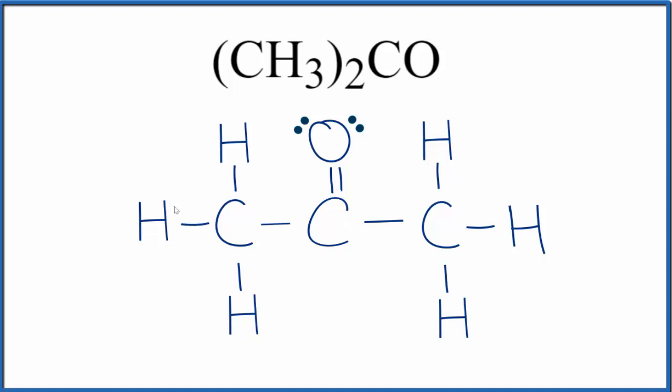Each of these atoms has an octet. Hydrogen, it only needs two valence electrons, so it's okay as well. So this is the Lewis structure for acetone. You could also draw it like this here, kind of a shortened version. We have a carbon here and a carbon here that would look like this in three dimensions, which gives you a little better sense of the molecular geometry.